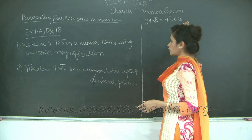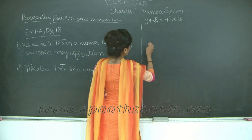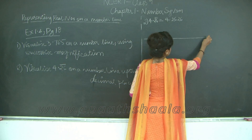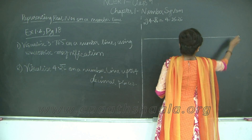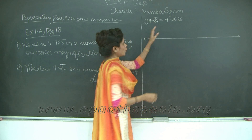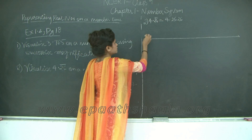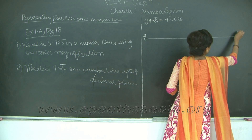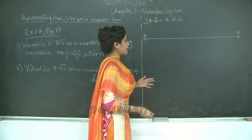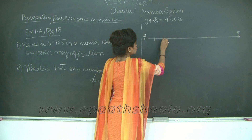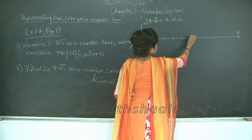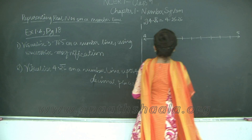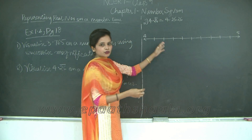We need to plot until 2626. Let us draw a number line. Now 4.2626 lies between 4 and 5, so I mark 4 and 5 on my number line and divide it into 10 equal parts. Each section will increment by 0.1.